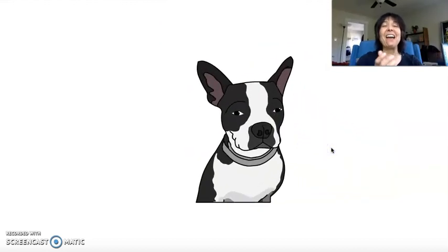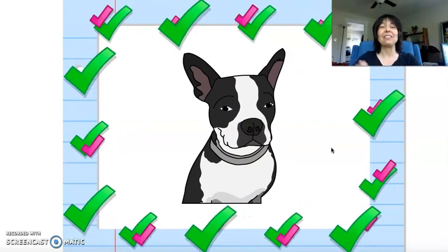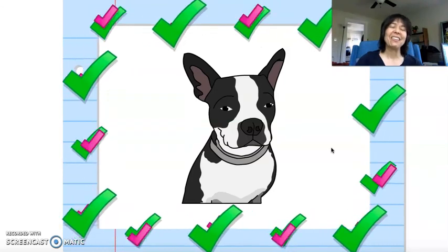A dog. Yes. A dog and a dog leash go together. You put the leash on the dog and you take it for a walk. Good job.